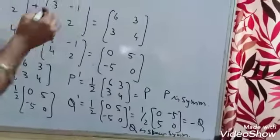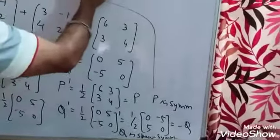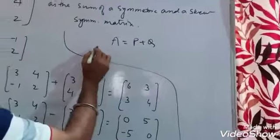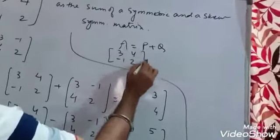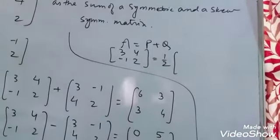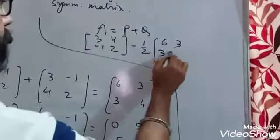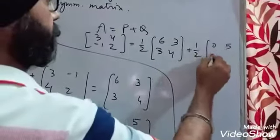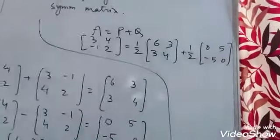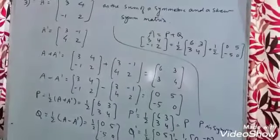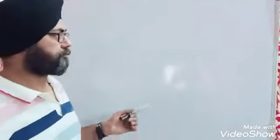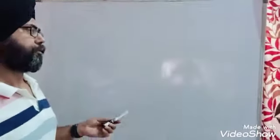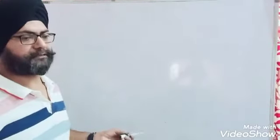Therefore, A equals P plus Q. The matrix A, [3, 4; -1, 2], is expressed as the sum of a symmetric matrix and a skew-symmetric matrix. You have seen an example of a matrix expressed as the sum of symmetric and skew-symmetric matrices. We will discuss more properties and examples related to these matrices in the next video. Thank you.